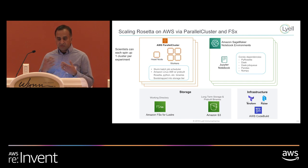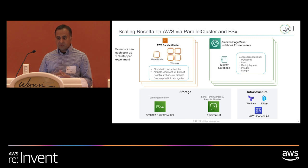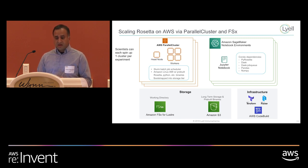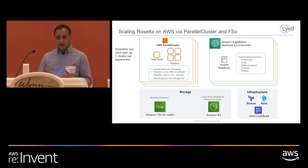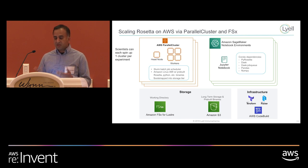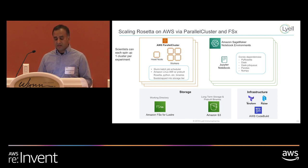Once scientists fire up their cluster and run their code, they take the results and bring them into a Jupyter notebook. The output of Rosetta is a bunch of score matrices as well as protein structures — generally hundreds or even up to thousands of protein models. They use their biological intuition as well as the statistics output by Rosetta to reduce those hundreds or thousands of protein models down into something much more manageable.